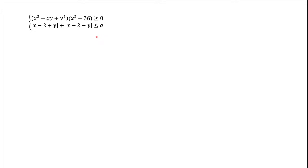Here's a cute parametric problem where we are looking for values of A when the system of these inequalities gives us one and only one solution. The way we're going to look at this problem first is we're going to look at the first inequality. This inequality contains only X and Y and there is no A, so this inequality just sets the restrictions on X and Y.